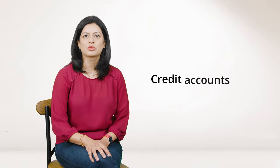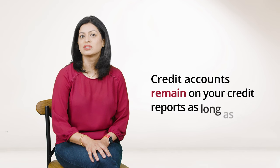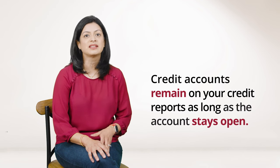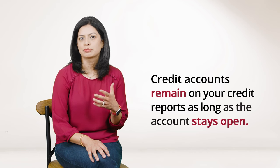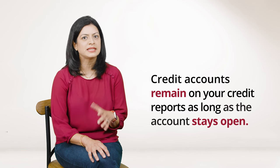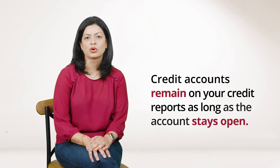Credit accounts remain on your credit reports as long as the account stays open and the lender is reporting it. Late payments, collections, and chapter 12 or 13 bankruptcy typically remain on your report for seven years from the date it was filed. Closed accounts and chapter 7 or 11 bankruptcy remain on your report for 10 years from the date it is filed.